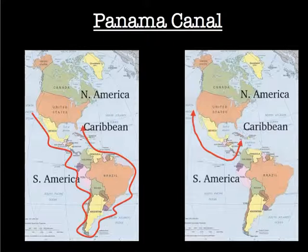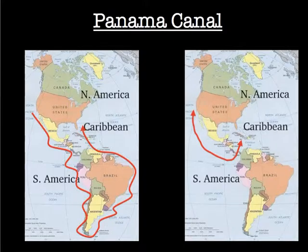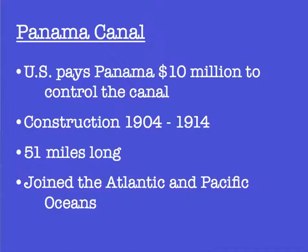One of the things Roosevelt is most known for is helping to secure the construction of the Panama Canal. This was a 10-year project, and from the two maps here you can see the canal drastically cuts down sailing time from the Atlantic to the Pacific Ocean. The United States paid more than $10 million for the canal and about $40 million to France for their construction equipment. Ten million dollars went directly to the new nation of Panama, which we also helped create by supporting the Panamanians in a rebellion against Colombia, since Colombia wasn't cooperating with our attempts to build the canal through the isthmus. The canal is 51 miles long, with several locks that raise and lower the water level. It joins the Atlantic and the Pacific, drastically cutting down shipping time.